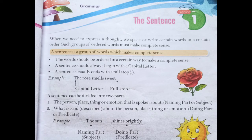A sentence is always divided into two parts. One is the subject and the other one is the predicate. The person, place, thing, or emotion about which we speak something is known as the subject. Whatever we describe or say about that person, place, thing, or emotion is known as the predicate. In simple words, the subject is the naming part and the predicate is the doing part.